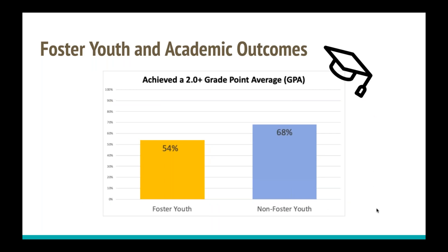Looking at CalPASS Plus system data for foster youth in the community college system, where 85% of foster youth are enrolled, there is a big gap in how many foster youth achieve a 2.0 GPA versus non-foster youth. The 2.0 GPA is a crucial data point because maintaining it is required to maintain financial aid. Just under half of foster youth are not maintaining this 2.0 GPA when they get to community college.